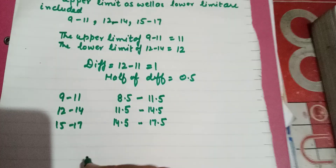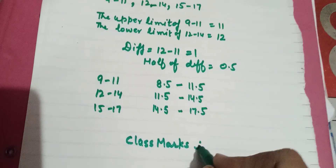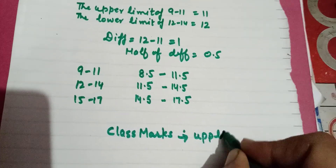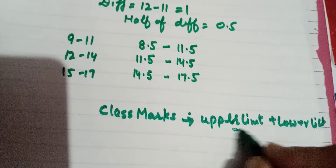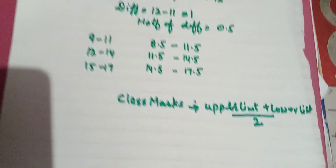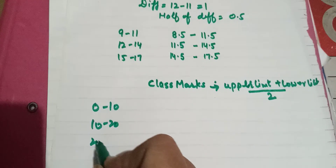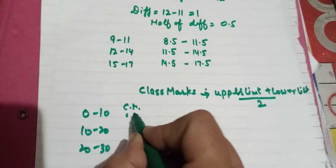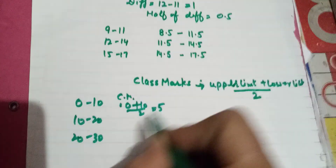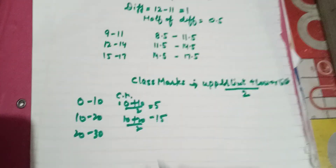In junior classes you have also learned about class marks. Class mark means: (upper limit + lower limit) ÷ 2. This is the formula — it gives the mid value of the class interval. For example, for 0 to 10 the class mark is (0+10)÷2 = 5; for 10 to 20 it is (10+20)÷2 = 15, and so on.